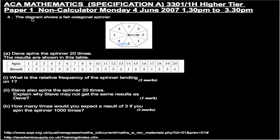The diagram shows a fair octagonal spinner. So we're at the fair and there's a spinner. Dave's at the fair and he spins the spinner 20 times. The results are shown in the table. So he spins it 1, 2, 3, 4, 5, etc. up to number 20. He spins it 20 times and these are the results.